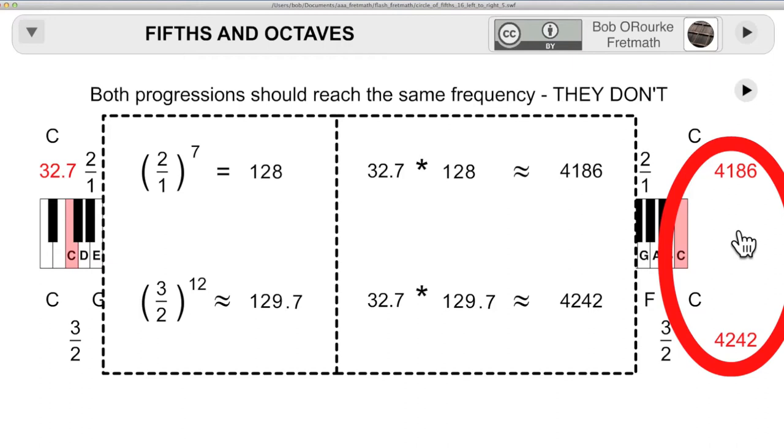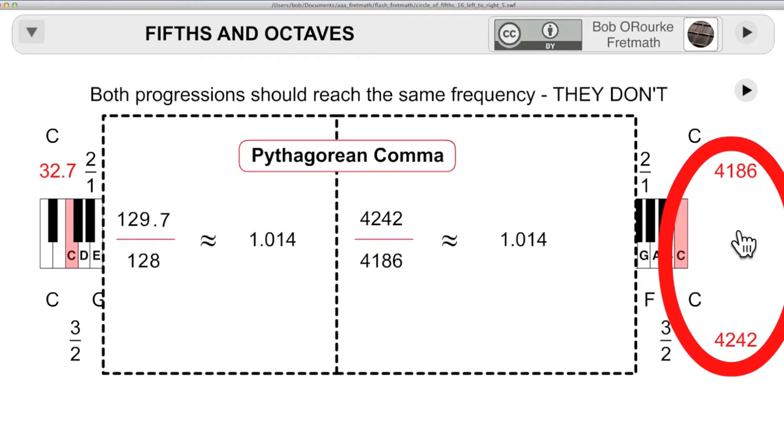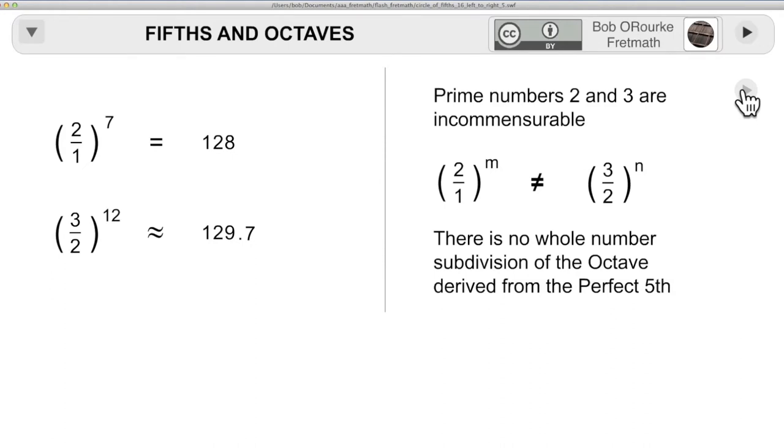3 to 2 to the twelfth power equals 129.7. Multiplied by 32.7, you get 4242. Now, each piano key can only play one frequency. The solution here is used on the guitar as well. It's called 12-tone equal temperament, and the ratio of the difference is approximately 1.014. According to Wikipedia, there's a few little differences there. And that's the Pythagorean comma. Music theory is full of commas and lemmas, and they all have to do with intervals that don't quite fit together the way we think they should. The mathematical reason they don't fit here is that 2 and 3 are prime numbers divisible only by themselves and 1. So there's no combination of perfect fifths that would fit exactly into any combination of octaves.